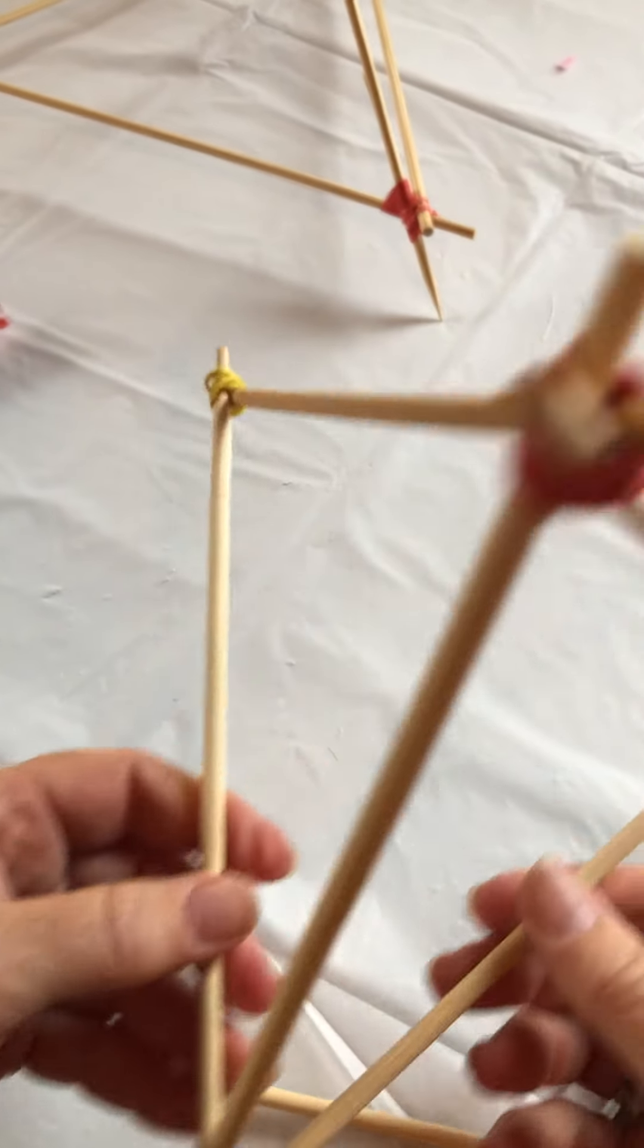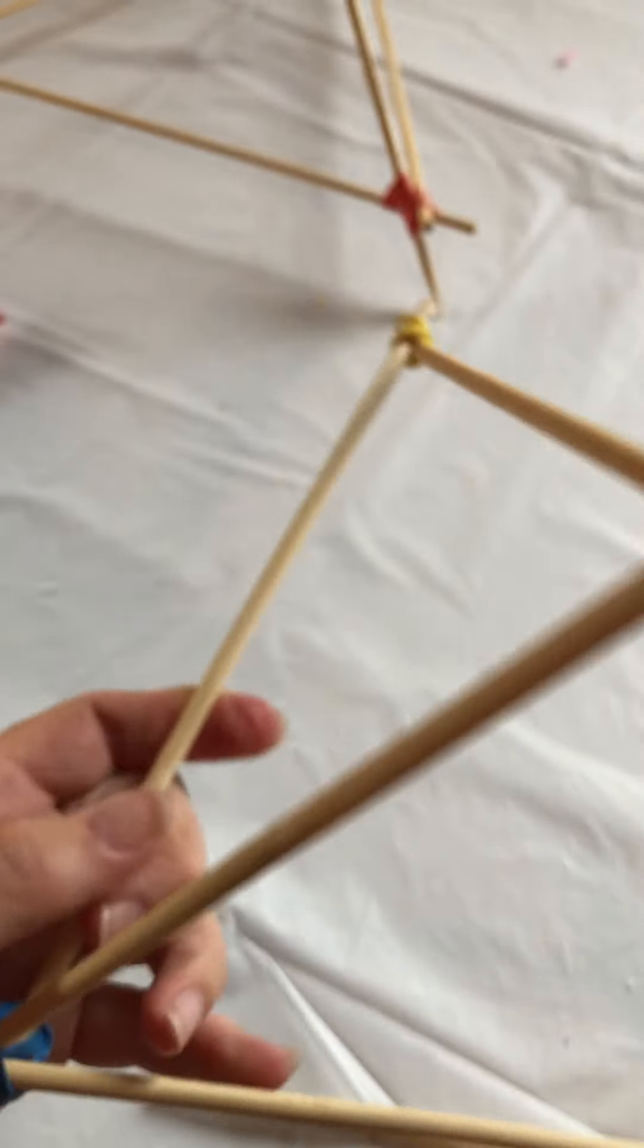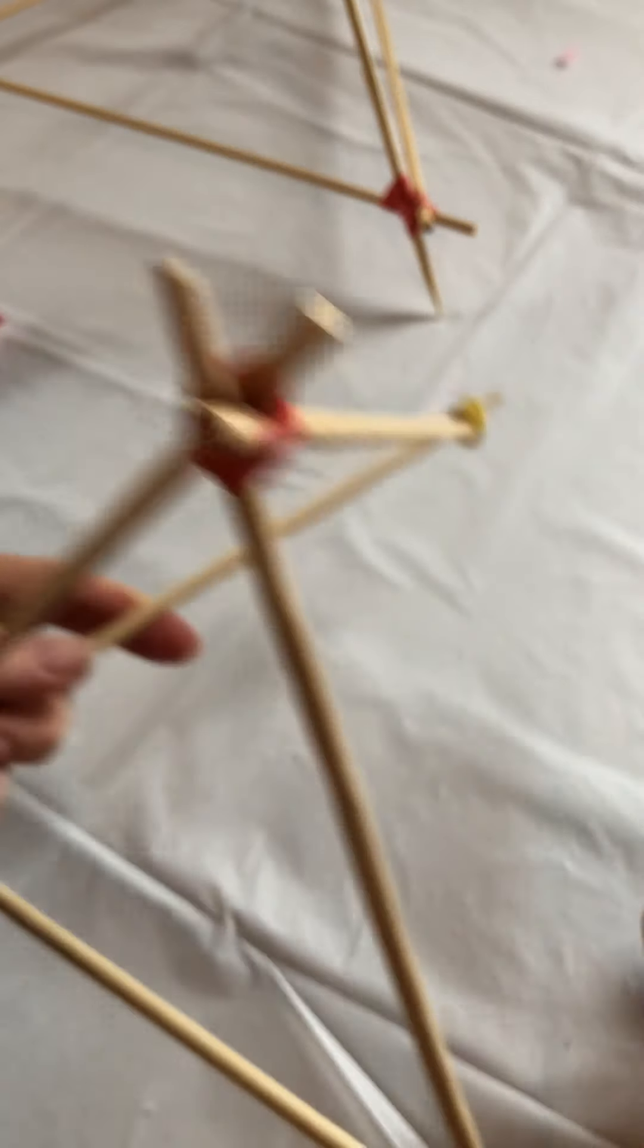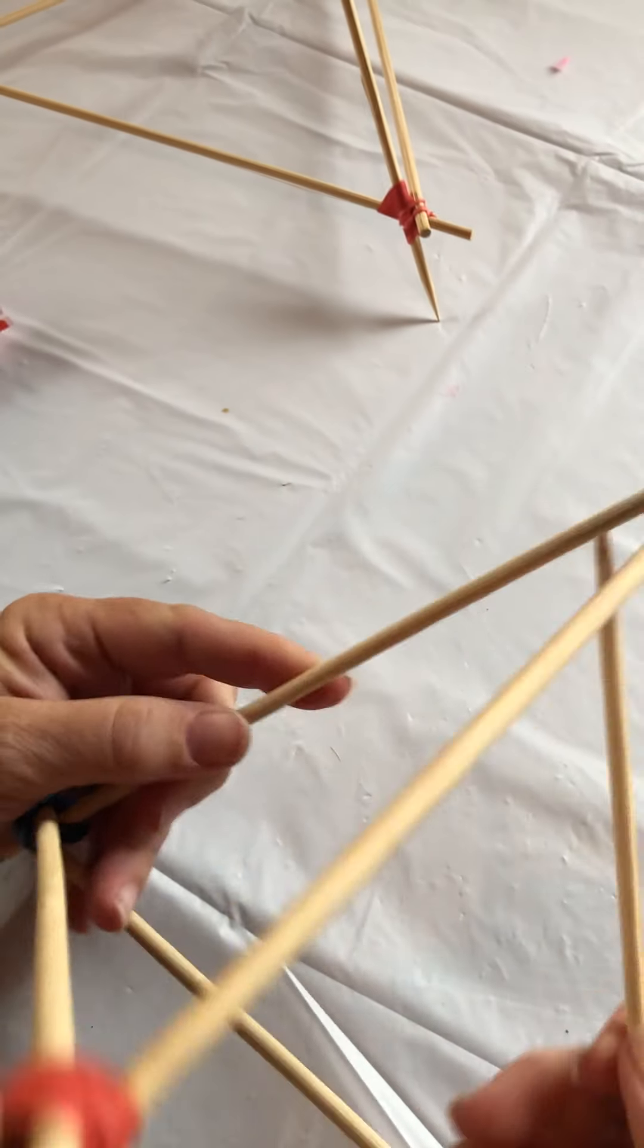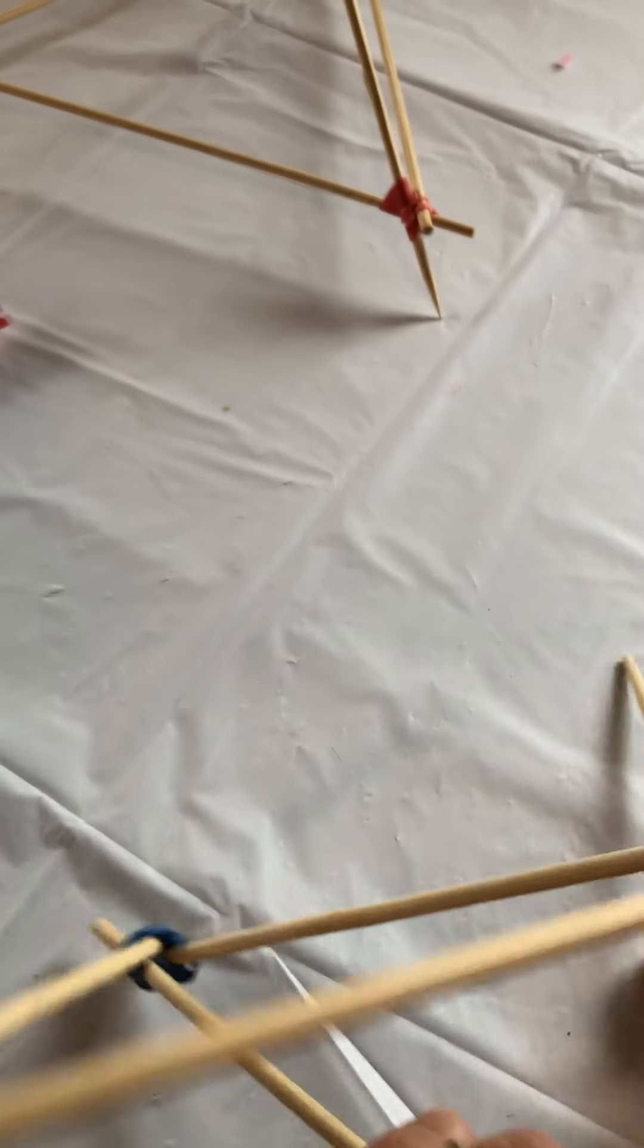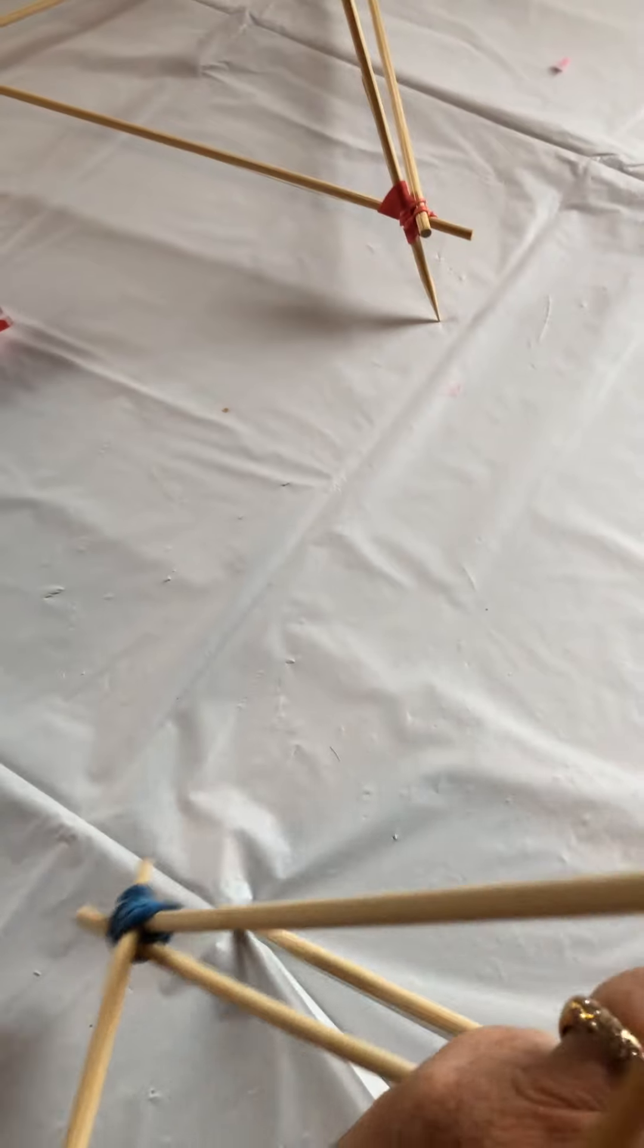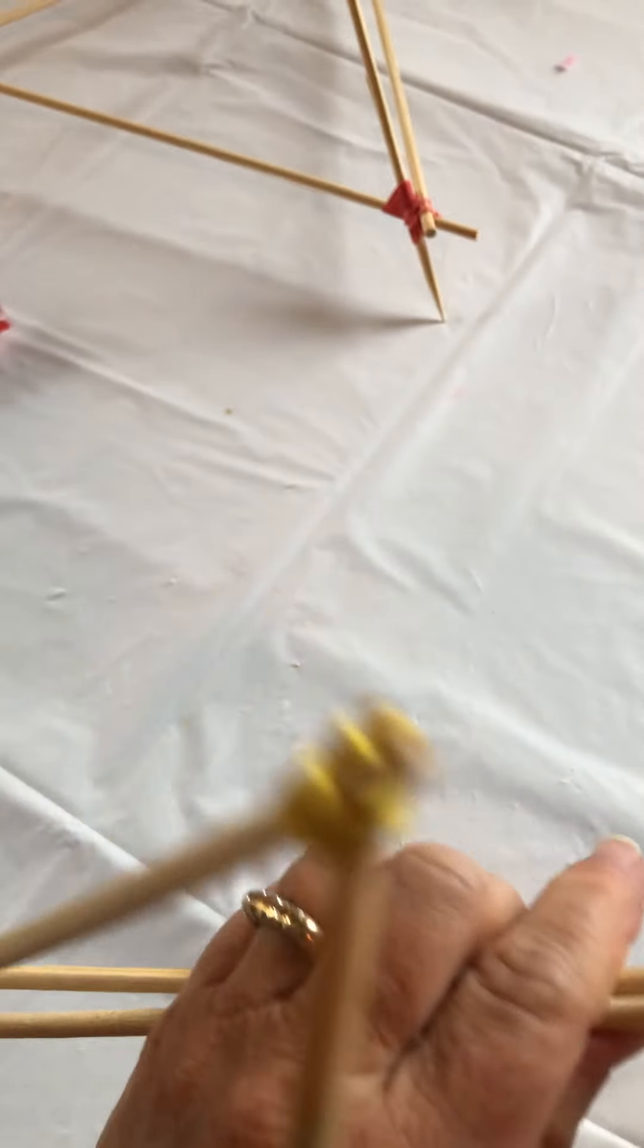I've got now one triangle, two triangles and really the only thing that's missing is this triangle that I'm going to use for the base. I'm going to use another rubber band to attach those.